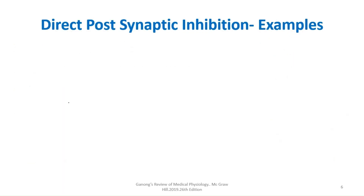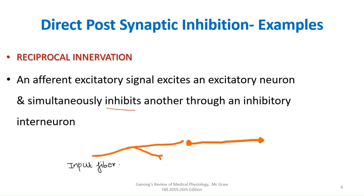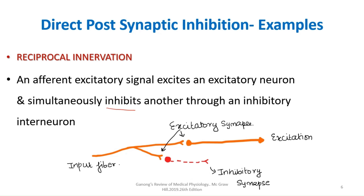The example of direct postsynaptic inhibition is reciprocal innervation. Here, an afferent excitatory signal excites one neuron directly and simultaneously inhibits another through an inhibitory interneuron. So the same input fiber stimulates one neuron but inhibits the other — this is known as reciprocal innervation, and it is seen in the stretch reflex.